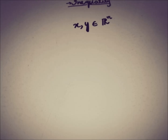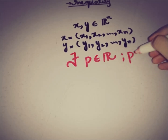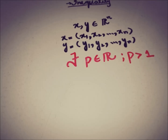We have two elements from the real space ℝⁿ, where x has n components and y has n components as well. We also have a real element P from ℝ, and we are given that P is greater than 1.